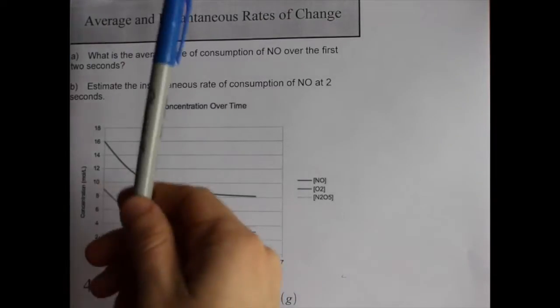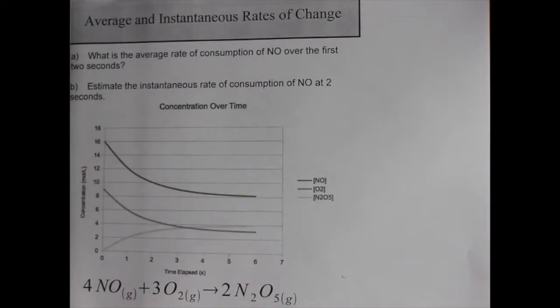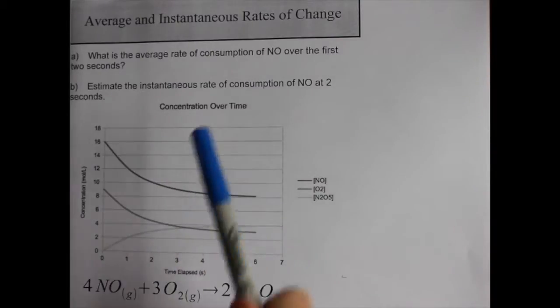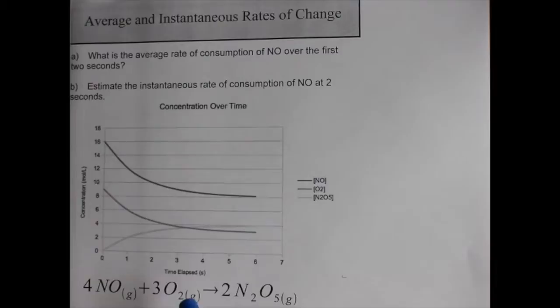Alright, today I want to talk about average and instantaneous rates of change for chemical reactions. Now I've created this graph of concentration versus time for a chemical reaction that has NO reacting with O2 to make N2O5.